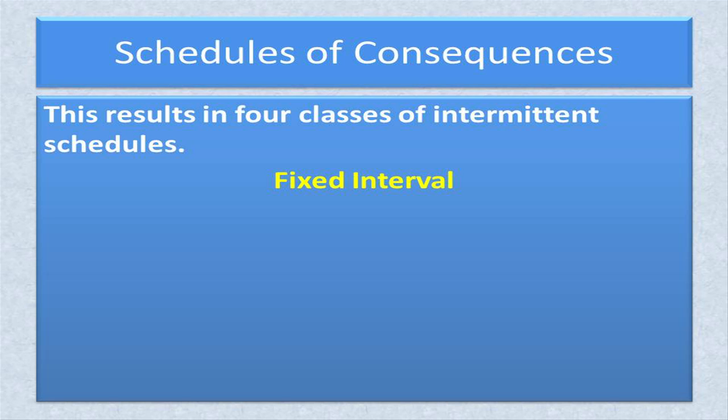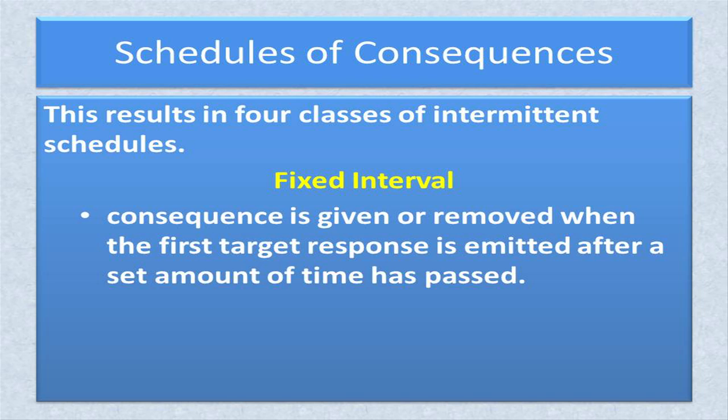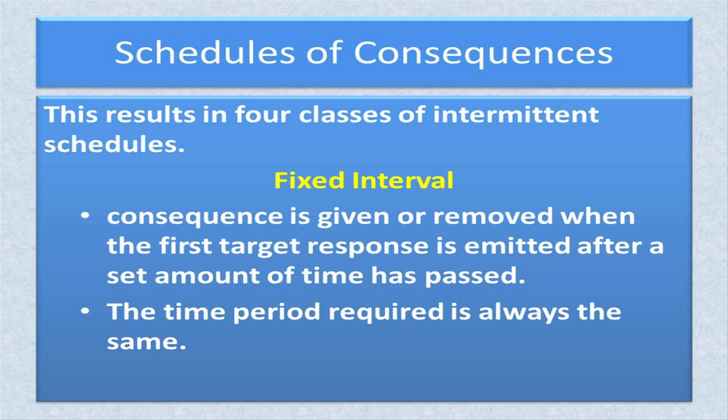The first is a fixed interval schedule. In this schedule, a consequence is given or removed when the first target response is emitted after a set amount of time has passed. The amount of time that must pass before the observer begins to look for the target behavior again is always the same.